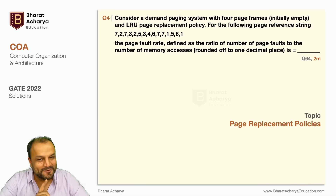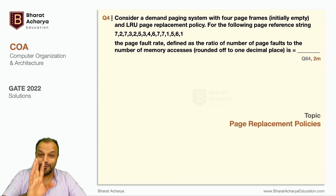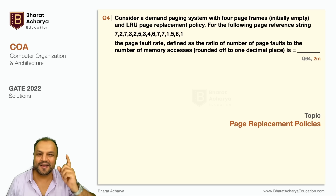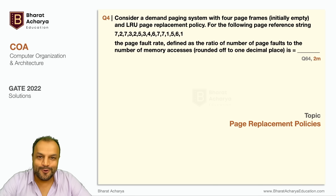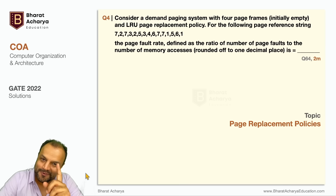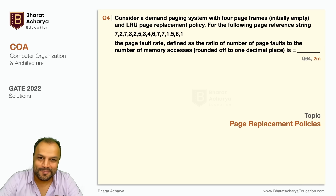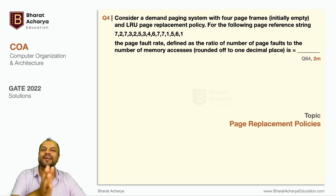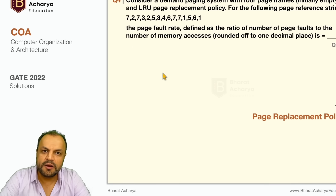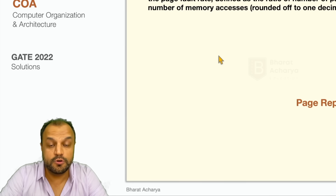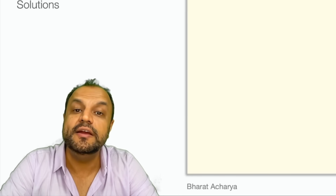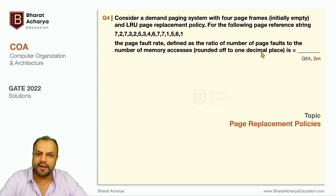How many times has this topic come? Remember when we did a whole lecture on page replacement and those numericals — I told you this keeps coming again and again. The algorithms: FIFO, LRU, LFU, optimal. You have questions for all of them, and each has a shortcut — the star method, the count method, counting backwards by the number of frames required. So what we're going to do: make a table, bring in pages one by one, detect hits, identify page faults, do replacement by LRU. By the time we're done with the table, we'll know the hits and page faults, and the ratio will be right in front of us.